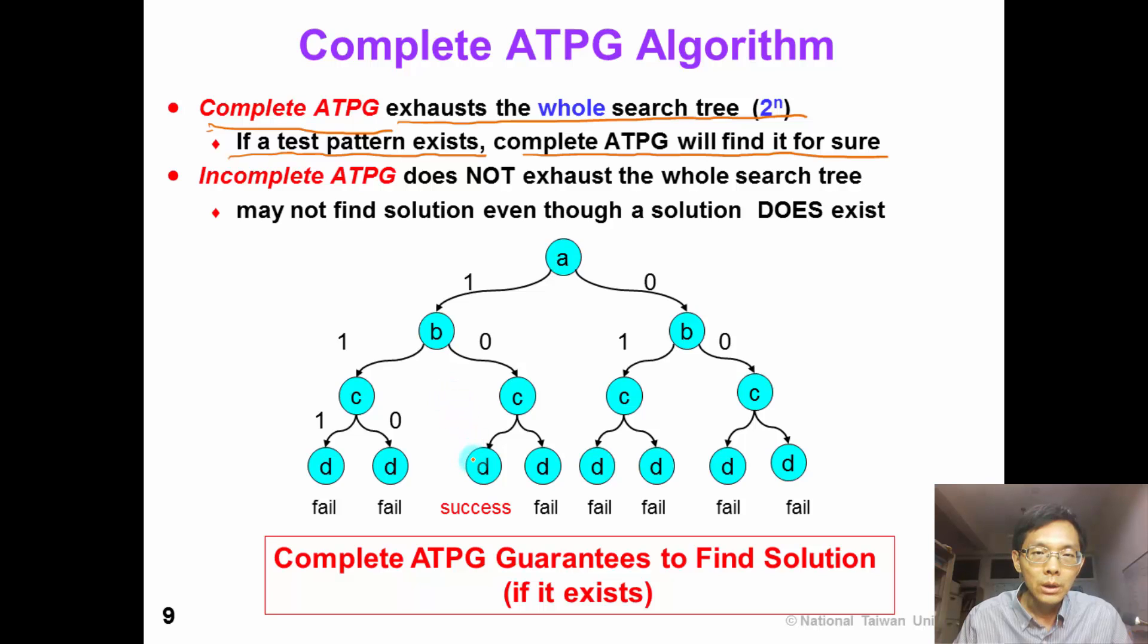For example, in this tree, even if there is only one test pattern, the complete ATPG algorithm will find it. On the other hand, incomplete ATPG does not exhaust the whole search tree. So maybe there is one solution, but the incomplete ATPG cannot guarantee to find it.